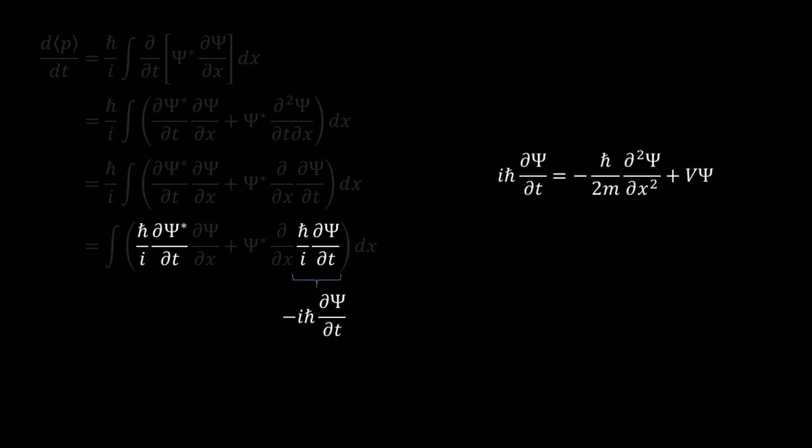We can now make use of the Schrödinger equation. Since the left-hand side is negative, we simply multiply the right-hand side by negative 1.